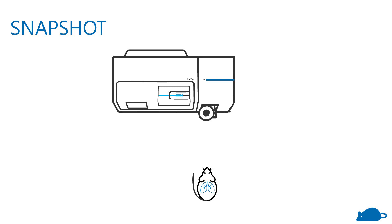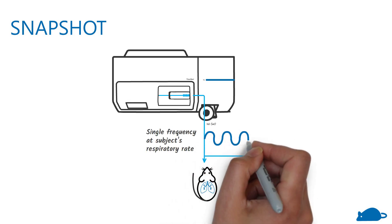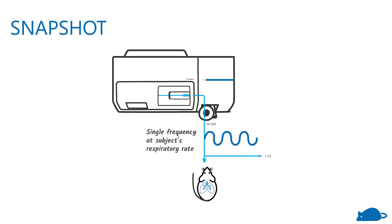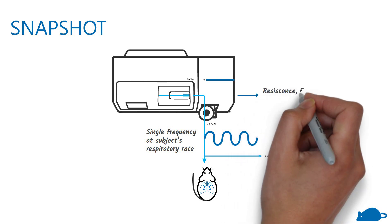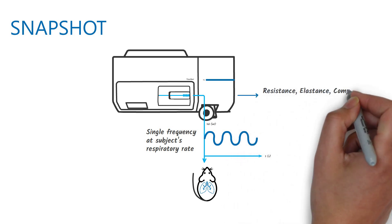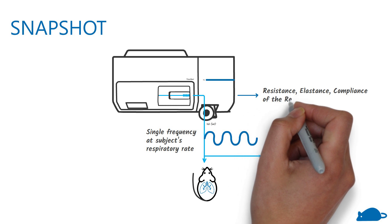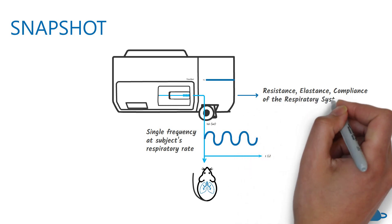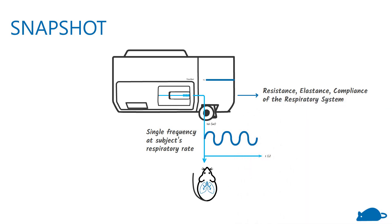In the snapshot measurement, the lungs are given a single frequency signal matched to the subject's respiratory rate. Using the signal, the flexi-vent calculates the resistance, elastance, and compliance of the respiratory system.